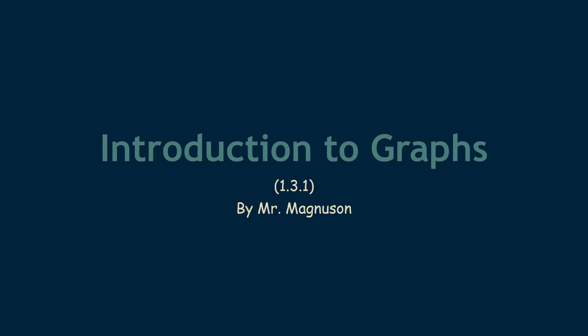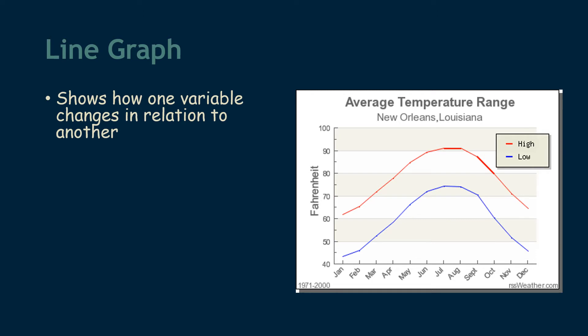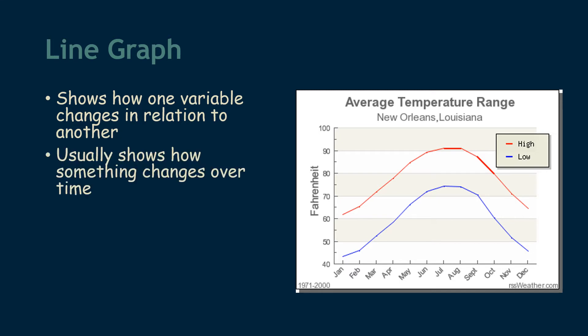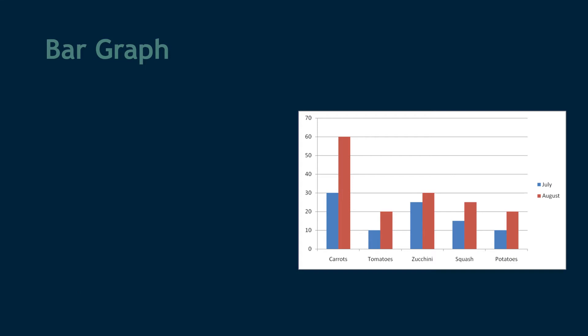Let's get started. The first type of graph we're going to look at is a line graph. A line graph can be used to show how one variable changes in relation to another, and usually it's going to show us how something changes over time. As an example, we could see how temperature changes throughout the year, like this picture we have, or we could see how much a person's weight changes with how much they eat in a day.